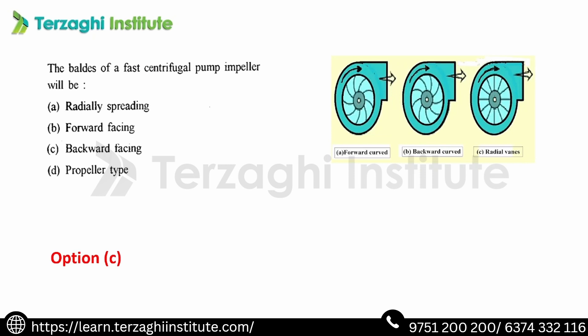The blades of a centrifugal pump have three types: radial blades, backward blades, and forward blades. Backward blades are the answer — the backward facing blades give the best efficiency. We use backward-curved blades at the center of the impeller.